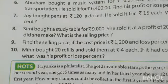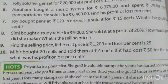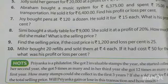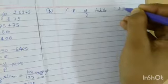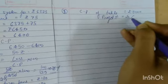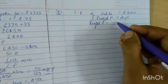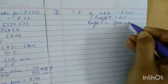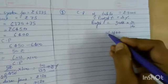Question number 8. Seema bought a study table for rupees 9,000 and sold it at a profit of 20 percent. Find how much profit she made. Cost price of table is 9,000 and profit percentage is 20 percent. Profit value equals 9,000 into 20 by 100, which gives 1,800 rupees profit.